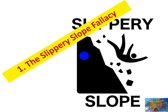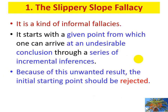The slippery slope fallacy is a kind of informal fallacy — fallacious because of the content, not the form. It usually starts with a given point from which one can arrive at an undesirable conclusion through a series of incremental inferences. Because of this unwanted result, the initial starting point should be rejected.